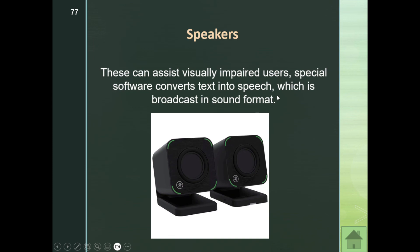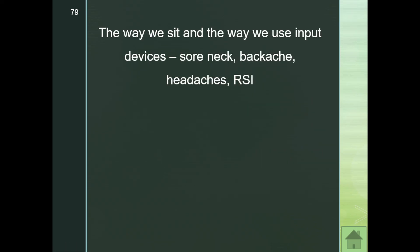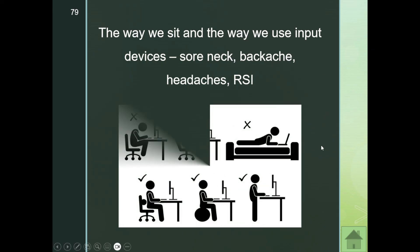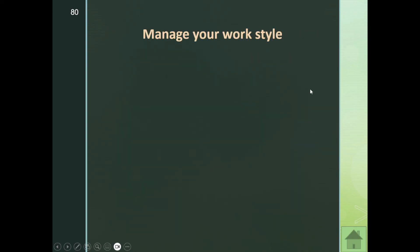We also look at input, output, and health issues. The way we sit and use input devices can result in a sore neck, backache, headaches, and RSI — repetitive strain injury. You should not be slouching. This is how you should be sitting: with proper back support. Height-adjustable desks where people stand and work are also becoming more common, and they do actually work.